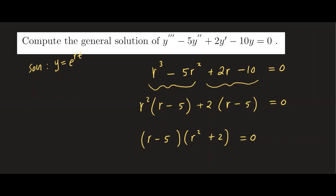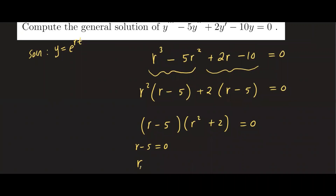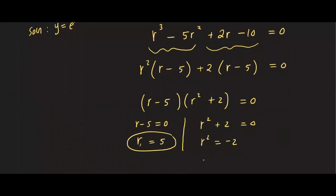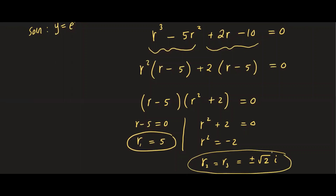Now we set each factor equal to zero. Setting r minus five equal to zero gives us r one equals five — one real root. Setting r squared plus two equal to zero gives r squared equals negative two. Taking the square roots gives complex roots r two and r three equal to plus and minus square root of two times i. So we have one real root and two complex conjugate roots.